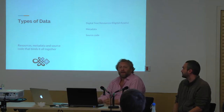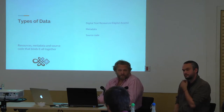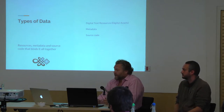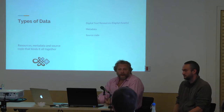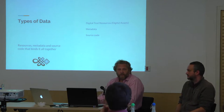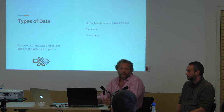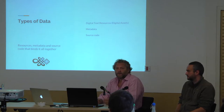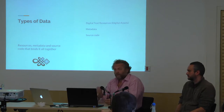What kinds of data are we talking about? Digital text resources — you could say digital assets — those are the assets we're managing. Then there's metadata about those assets, and then source code. Source code is where there are a lot of business rules — what's called business rules in software development — that are implemented in the software. They're not in the metadata or in the resource you're managing; they're implemented in the source code, so you have to keep track of that as well.